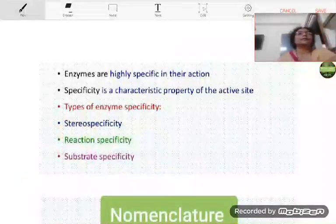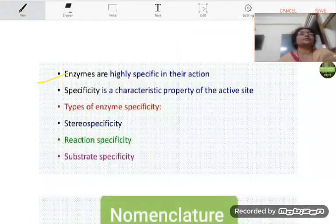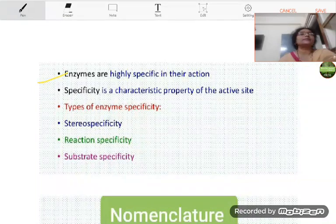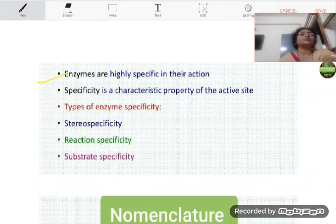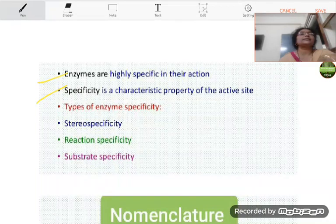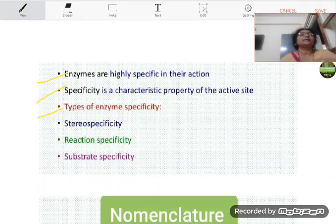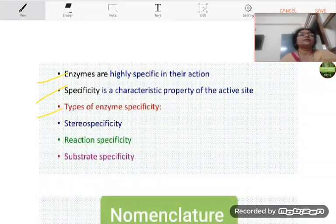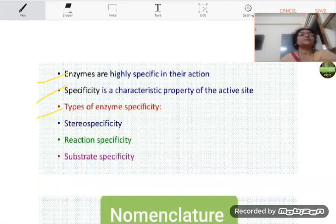Enzymes can be specific in their action. We have discussed also earlier that specific enzyme functions on a specific substrate and the specificity is a characteristic property of the active sites of enzymes and types of enzyme specificity are stereo specificity, reaction specificity and substrate specificity.